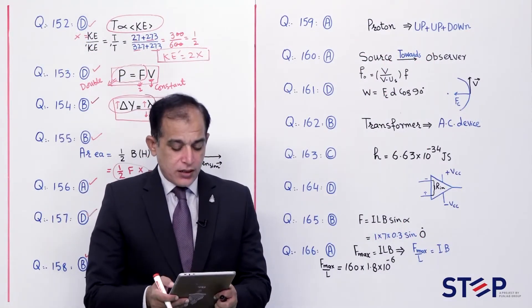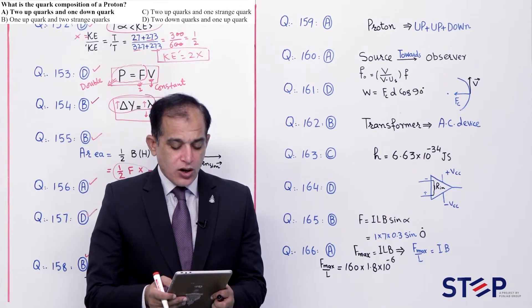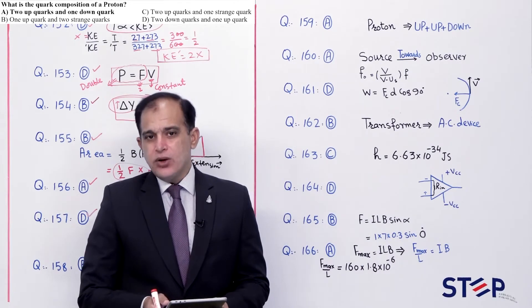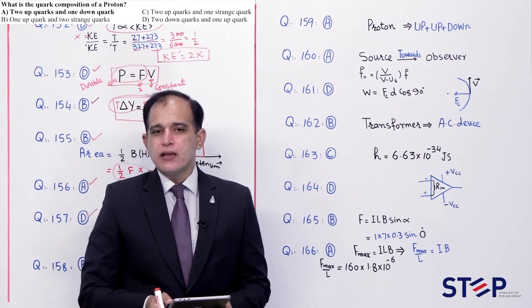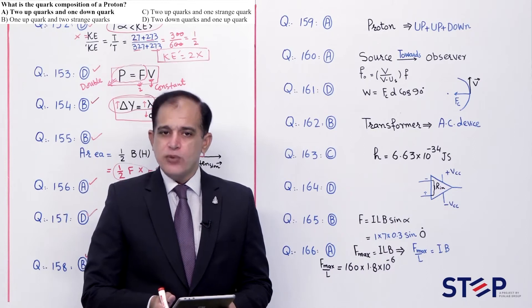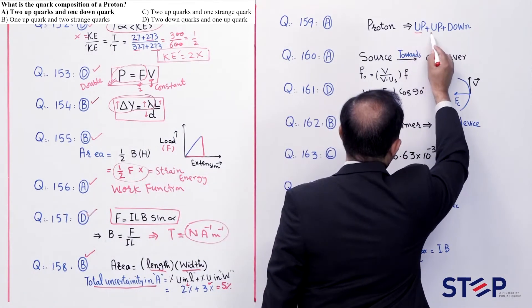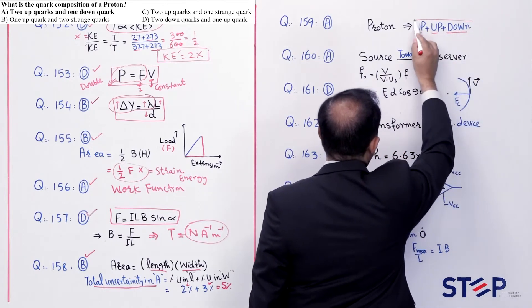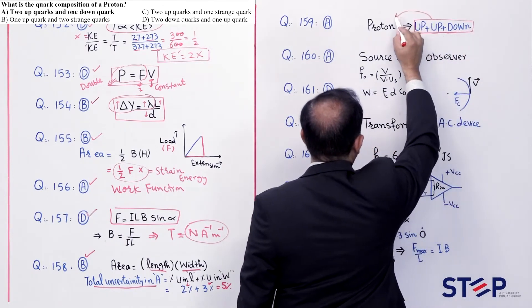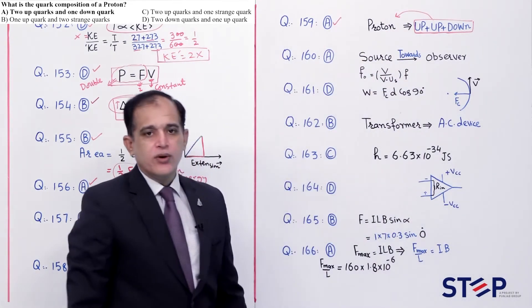Question number 159: Quark composition of a proton. Proton ek baryon hai, jo 3 quarks se banta hai. Proton ki quark composition hai: up, up, and down (uud). Do up aur ek down quark milke proton banate hain. Correct option: Alpha.